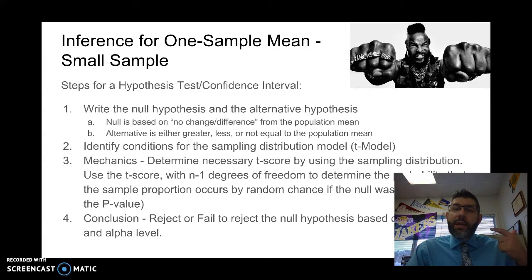Go check those out. And then the last one, of course, is our nearly normal condition, and that basically says that we have to have a unimodal and symmetric distribution if our sample size is less than 30. If it's greater than 30, then we're probably going to use a normal model, or we can just use the central limit theorem, and that works.